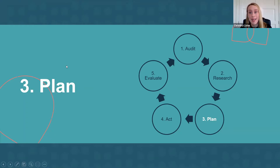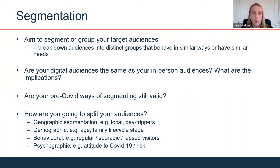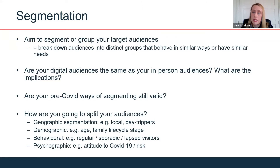The third stage is planning. Thinking about who your audiences are, it is useful to segment them — to group them into distinct groups that behave in similar ways, have similar needs, and are likely to engage with you similarly. It's interesting to think about whether your digital audiences are the same as your in-person audiences and what the implications are. If you had a segmentation approach pre-COVID, is it still valid? You can use the Audience Agency's audience spectrum model, Morris Hargreaves McIntyre's Culture Segments model, or do your own.